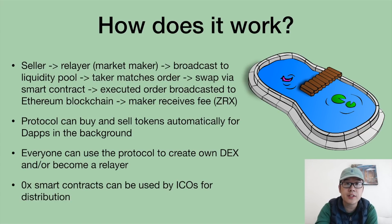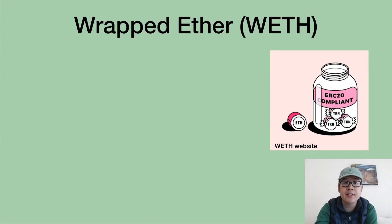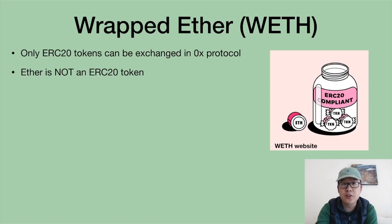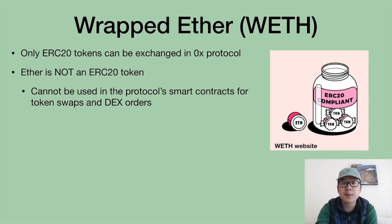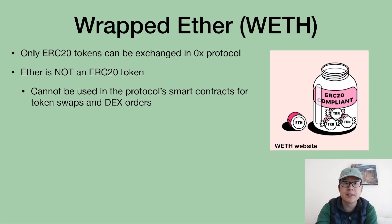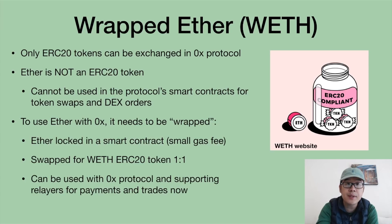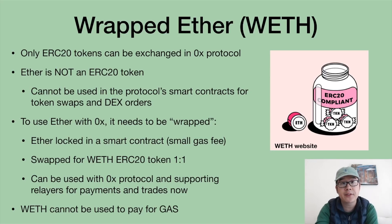ZeroX smart contracts are also useful because they can be used by ICOs for launch and distribution. There's also a special thing called Wrapped Ether, or WETH, in this system — because only ERC-20 tokens can be exchanged in the ZRX protocol as of now. Ether is not an ERC-20 token, so it can't be used directly. To use Ether within the ZRX system, it needs to be wrapped: locked in a smart contract with a small gas fee and swapped one-to-one for the WETH ERC-20 token. Note that WETH cannot be used to pay for gas.